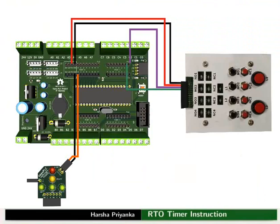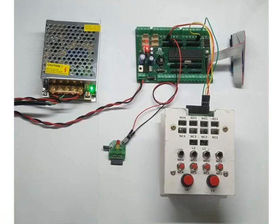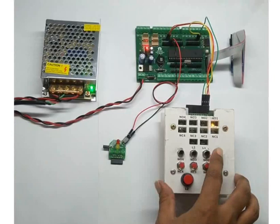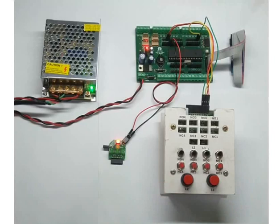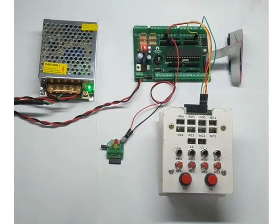After making all the connections properly, turn on the power supply. Initially, the red LED will not glow. Press the switch NO1. Remember, NO1 should be pressed for at least 5 seconds for the LED to turn on. The red LED should turn on 5 seconds after NO1 is pressed. Once we release NO1, it does not turn off the red LED. For that, we need to press the switch NO2. Thus, an RTO timer retains the accumulated value even after the switch is released.